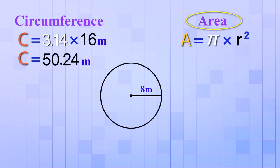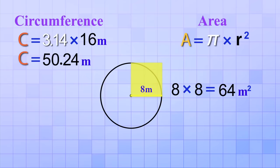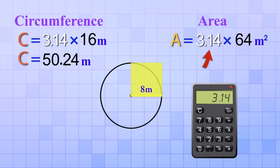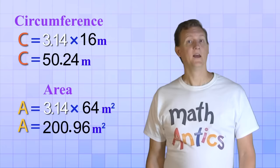Alright, now let's find the area using our formula area equals Pi times r squared. Again, we start with the radius, but instead of doubling it, we square it. That means we multiply it by itself. 8 meters times 8 meters equals 64 meters squared. Then we multiply that by Pi. 64 times 3.14 equals 200.96 meters squared. That's the area of this circle.